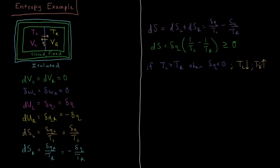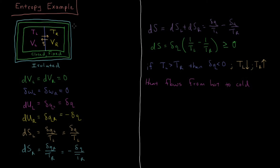This is consistent with our common-sense knowledge: heat flows from high-temperature places to low-temperature places and equilibrates those temperatures over time. TL is higher and its temperature goes down as it gives heat to the right, raising its temperature. This raises the total entropy of the system. The second law of thermodynamics actually predicts and enforces that heat must flow from hot to cold.